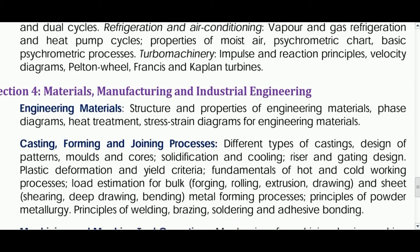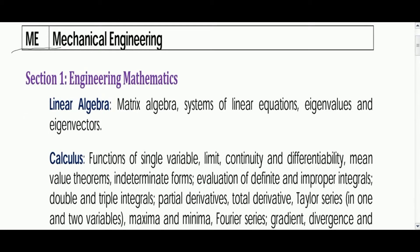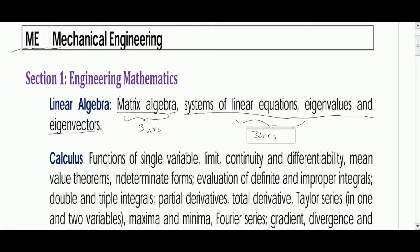Let us start from Mathematics. In the first section, Linear Algebra, the topics are: Matrix Algebra, System of Linear Equations, Eigenvalues and Eigenvectors. For Matrix Algebra — covering matrix identities, basics, multiplication, division, and finding inverses — it will take about three hours. For System of Linear Equations, Eigenvalues and Eigenvectors, it will take around three to five hours. Completely, you can finish the Linear Algebra chapter in about six hours.